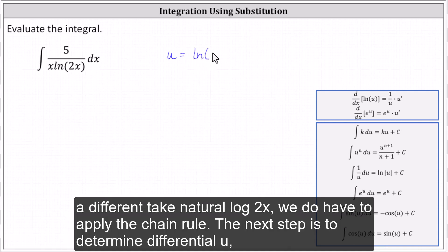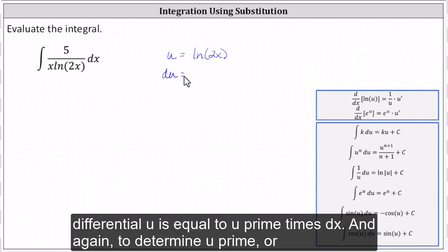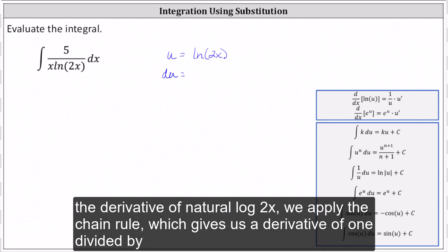Of course, to differentiate natural log 2x, we do have to apply the chain rule. The next step is to determine differential u. Differential u is equal to u prime times dx. And again, to determine u prime, or the derivative of natural log 2x, we apply the chain rule.